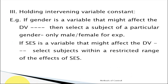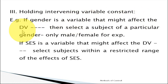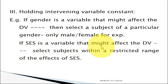The variable which may affect the intervening variable and the dependent variable will be controlled. So we talked about random assignment and matching. Number three is holding the intervening variable constant. Whichever variable we think may affect our experimental research, we can hold it constant. For example, if gender may affect our dependent variable, we can select subjects of a particular gender only, removing the issue of gender entirely. Or if socio-economic status is a variable, we select subjects within a restricted range of socio-economic status, so that issue will not arise.